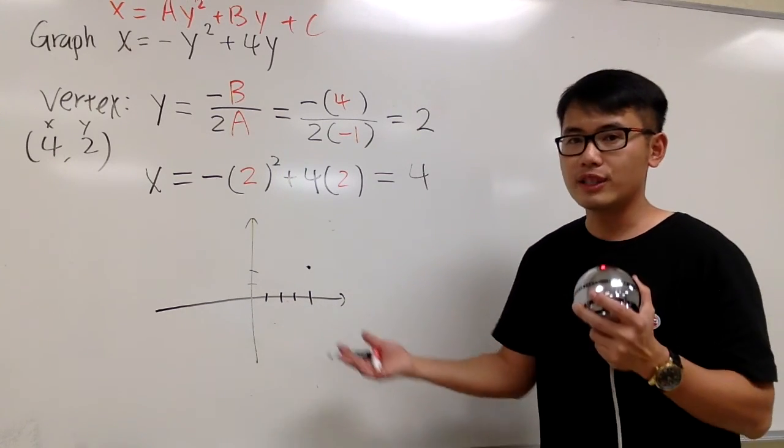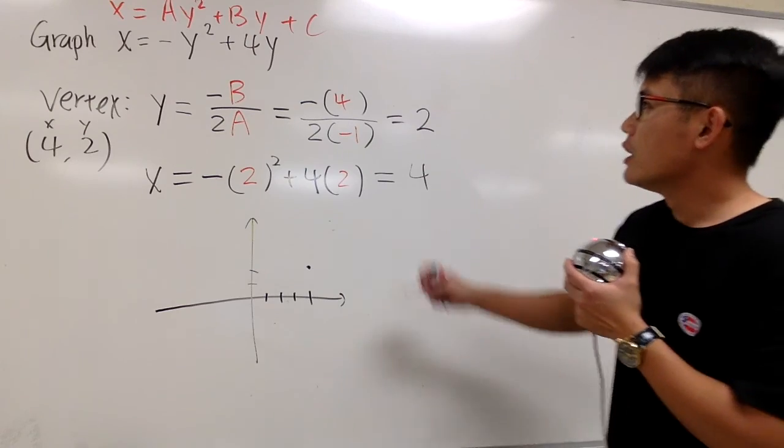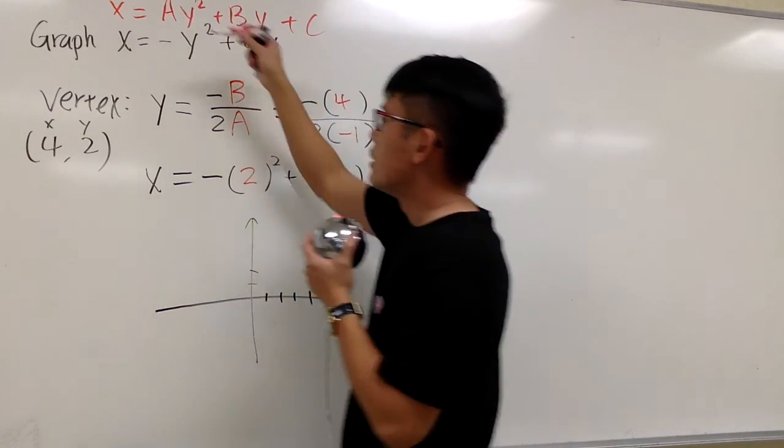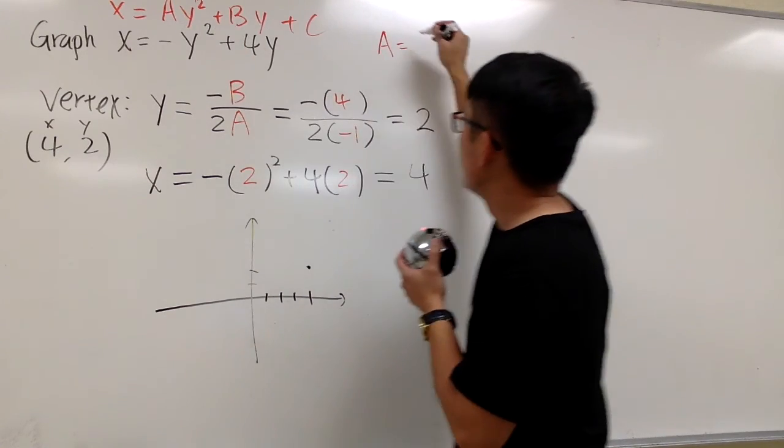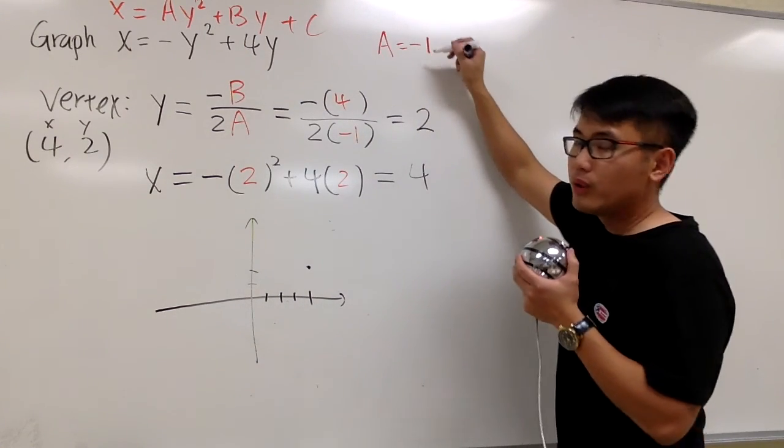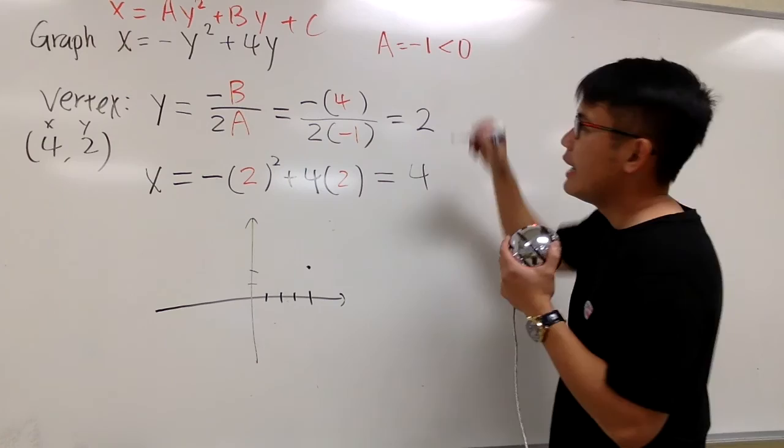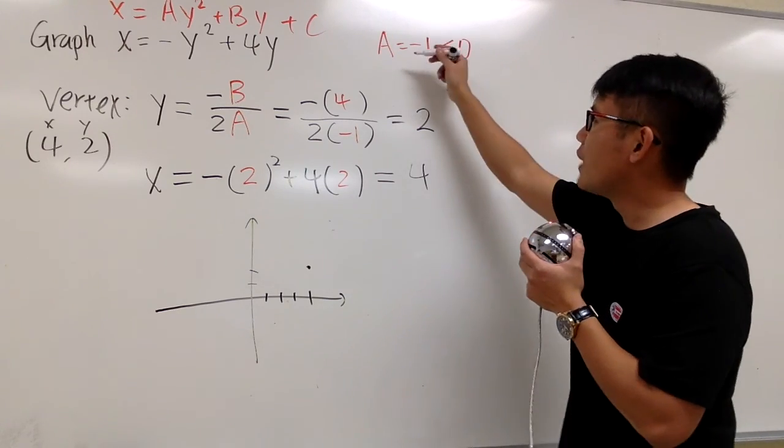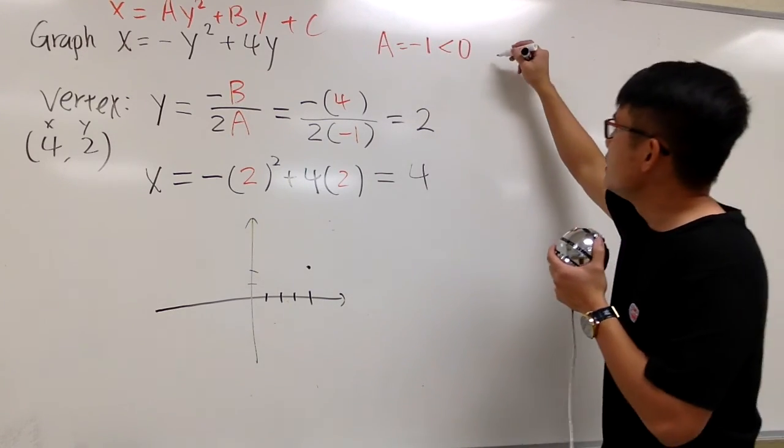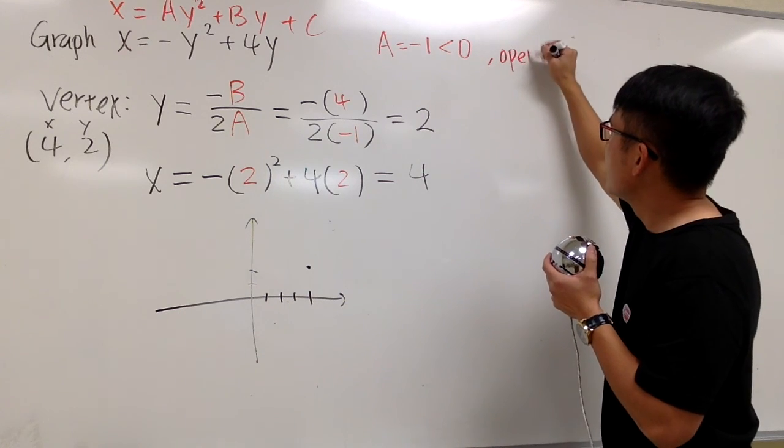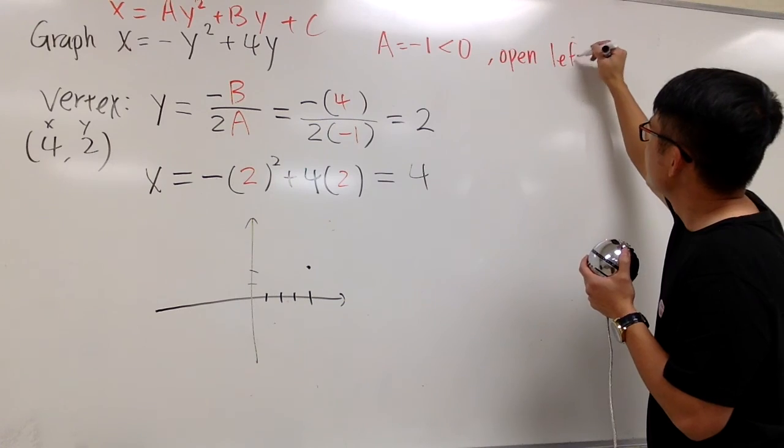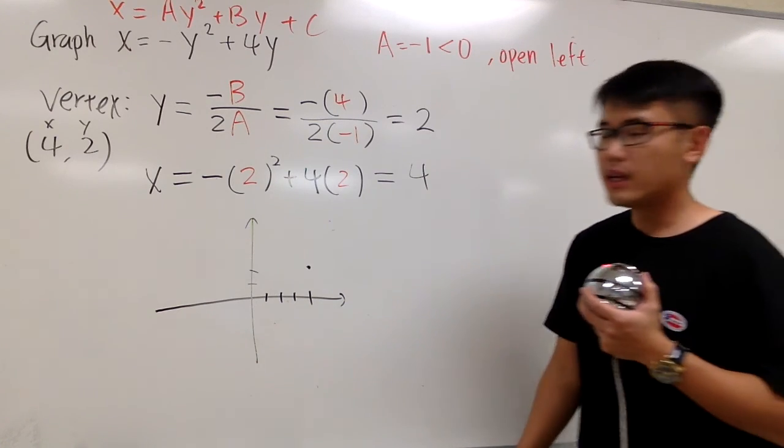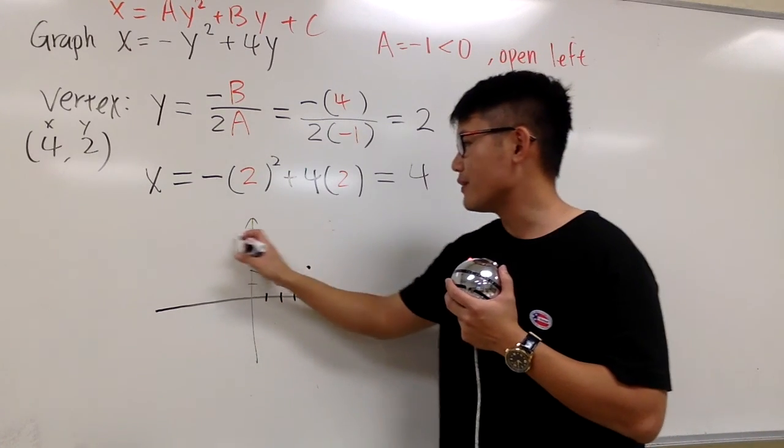And let's see what else we can use. As we mentioned earlier, the A value is negative 1, and we know this is less than 0. And in the sideways situation, when we have the A value being negative, this means that we have a parabola that's open to the left.